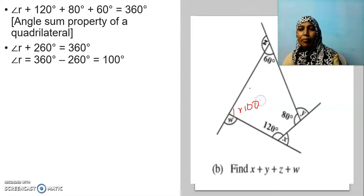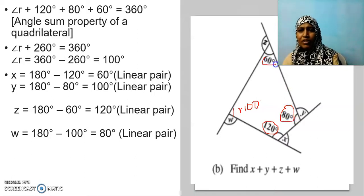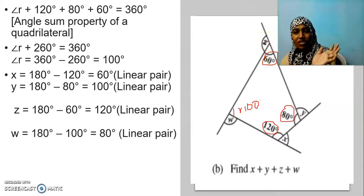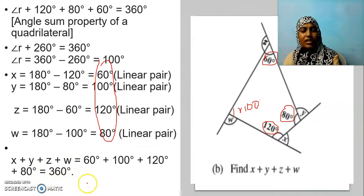Now using the concept of linear pair — what does it mean by linear pair angles? The sum of angles in a straight line is 180 degrees. With that concept, x is equal to 180 minus 120, y is 180 minus 80, z is 180 minus 60. Those two angles are called linear pair angles; if you add them you get 180 degrees. So if I have found x, y, z and w and add all four angles, the answer is 360 degrees.